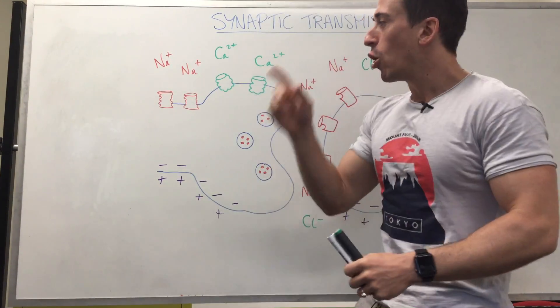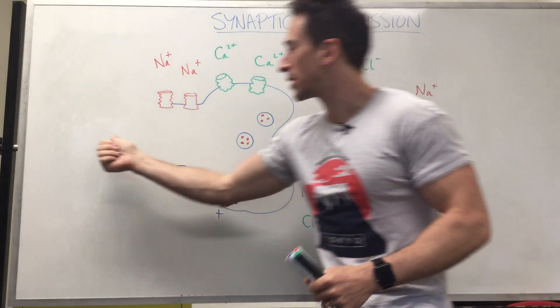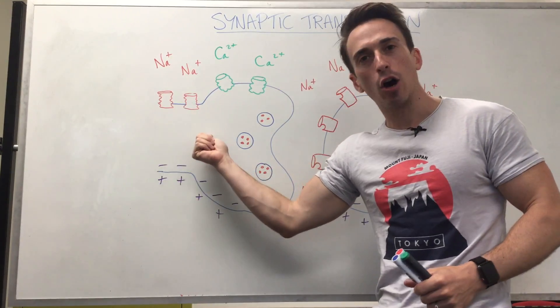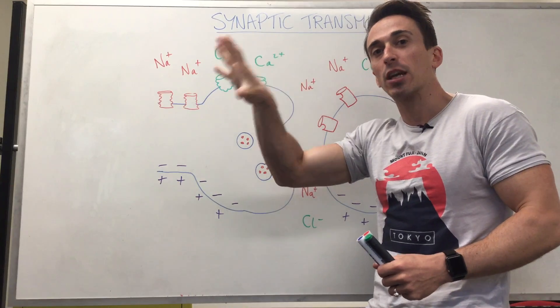And now what we're going to talk about is what happens once that action potential has reached the very end of the neuron, the synaptic terminal.